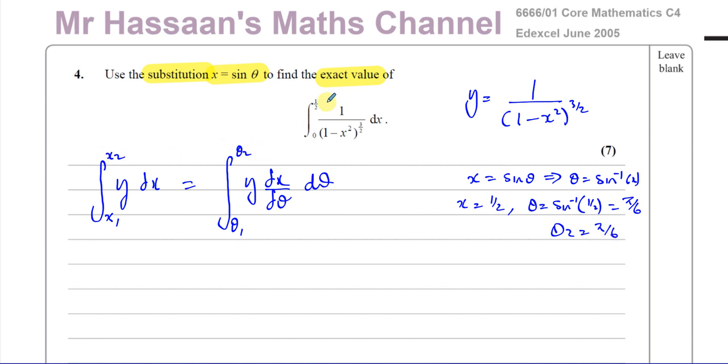So theta 2 is pi over 6 and theta 1 is 0. Now, y is 1 over all of this to the power of 3 over 2. So I'll have 1 over (1 minus sine theta) and just that is squared. But this bracket is raised to the power of 3 over 2.